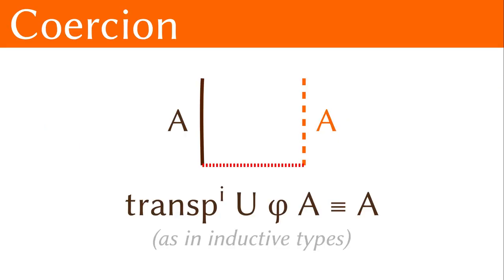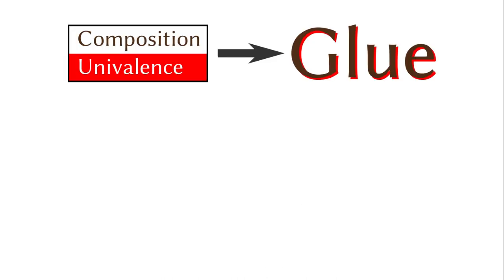The first issue is coercion. We can simply do nothing as in the natural number type. For the remaining two issues, we are going to solve them by the glue types. The glue types are like the formal compositions in the universe, except that they are taking equivalences instead of paths as walls.